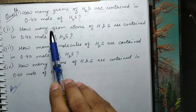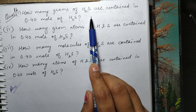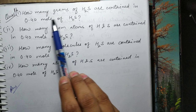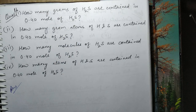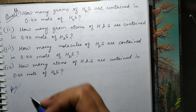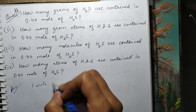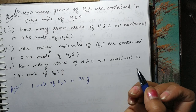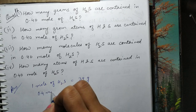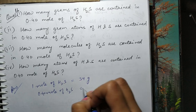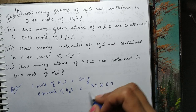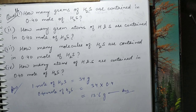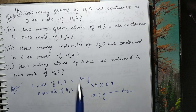Next question: how many grams of H₂S are contained in 0.40 mol of H₂S? Mol aur molecular mass ko correlate karna hai. 1 mol of H₂S = 34 gram. So 0.4 mol of H₂S = 34 × 0.4 = 13.6 gram. Yeh first part ho gaya.